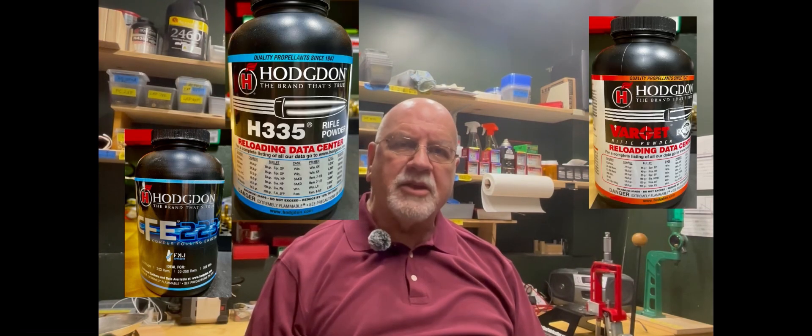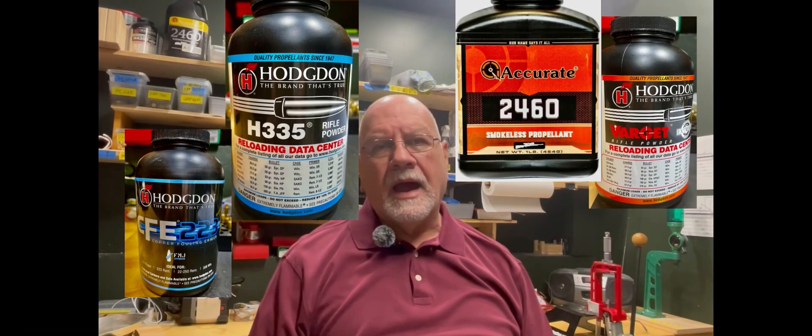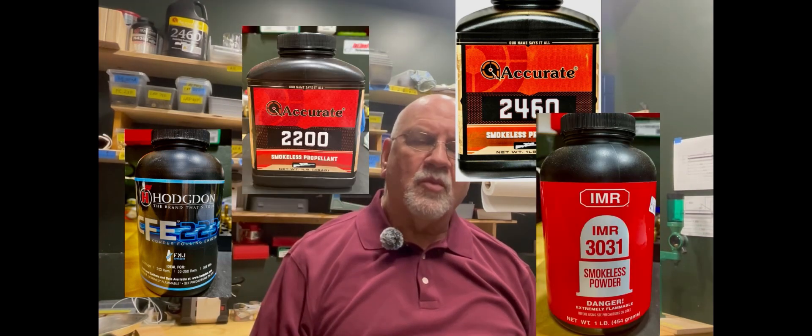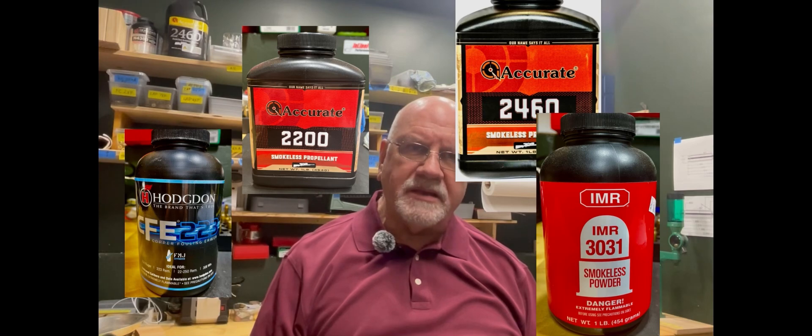In order from the slowest burning powder to the fastest burning powder, we'll be shooting CFE 223, Varget, H335, Accurate 2460, IMR 3031, and Accurate 2200. We will take these in order week by week, and we will post the results so you can see exactly which powders perform with these bullets.